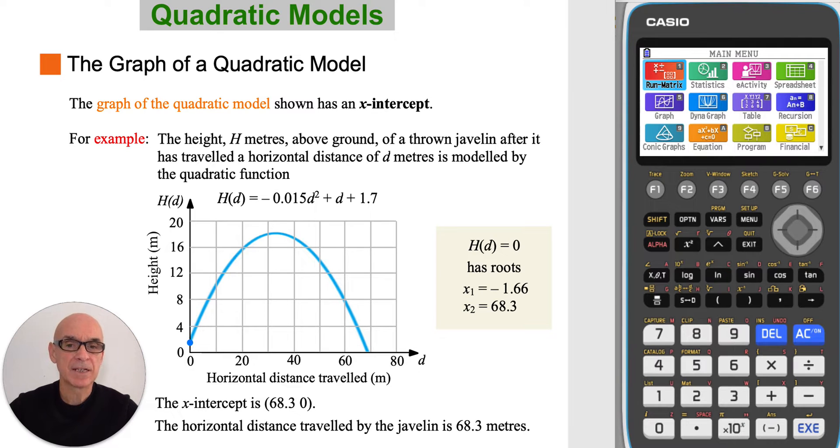The model has x-intercepts, which are found by solving the equation h of d is equal to 0, by equating this function equal to 0. As can be seen, one of the roots is negative. And as we cannot have negative time, this cannot be an x-intercept. So the x-intercept is 68.3 comma 0, and this is interpreted as the horizontal distance traveled by the javelin.